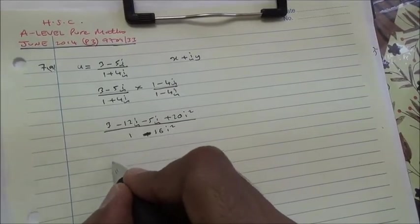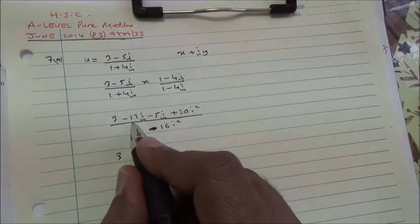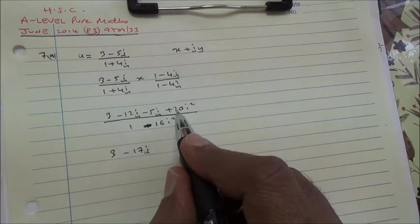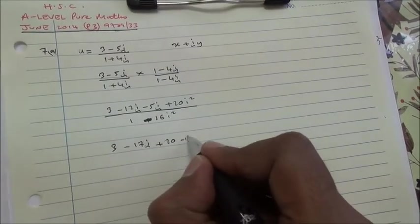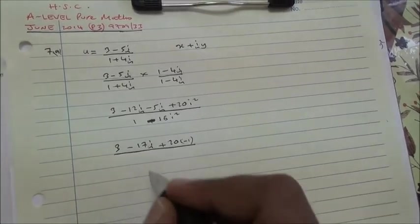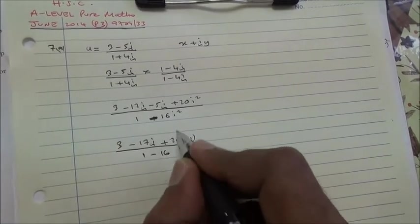4i times 1 is 4i. 4i minus 4i times 1 is minus 4i. So, 4i minus 4i cancels out. 4i times minus 4i is minus 16i squared. So, we have 3 minus 12i minus 5i is minus 17i, and plus 20 times i squared. i squared is minus 1.